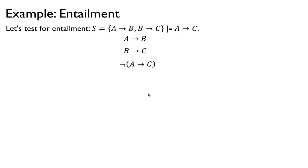Let's do the entailment example. We want to show that given 'A implies B' and 'B implies C', we can entail 'A implies C' — that makes sense because together they form a chain. To do this, we assume the premises 'A implies B' and 'B implies C', and also assume the negation of the conclusion. We want to assume the conclusion is false and see if we can close the tree to get a contradiction, therefore the conclusion must be true.